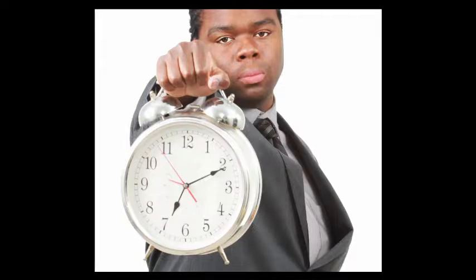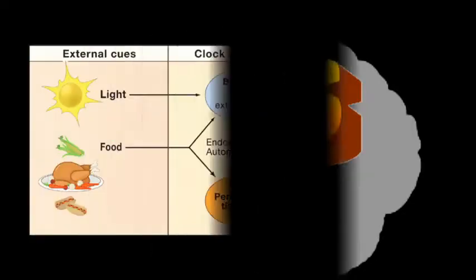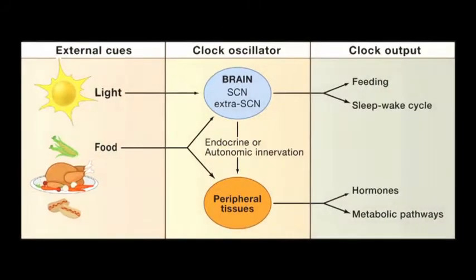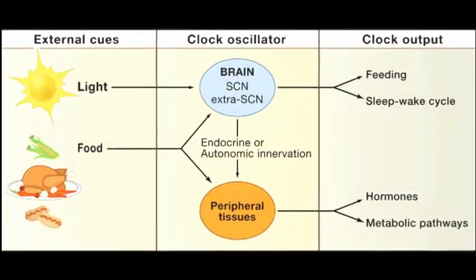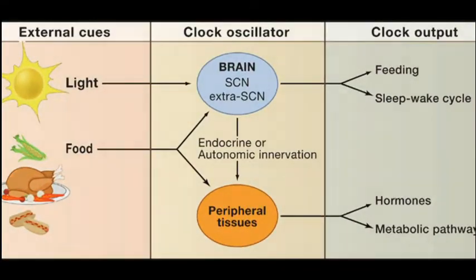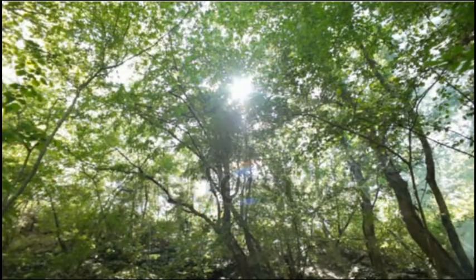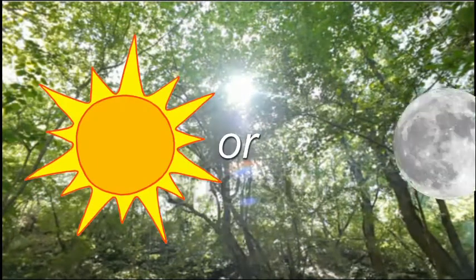But wait — look at the time! It's Cue Time! The Circadian Rhythm is affected by numerous external cues, although the most influential one is exposure to sunlight. It gives your body a clue about whether it's day or night.